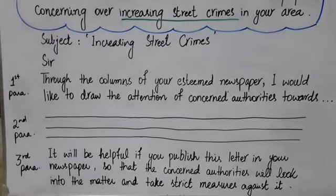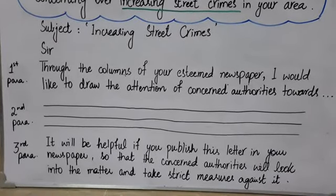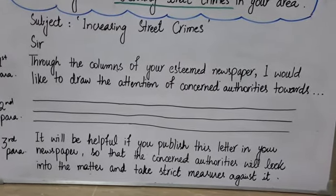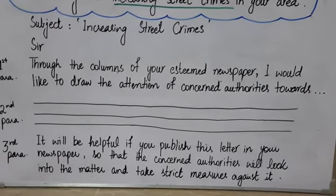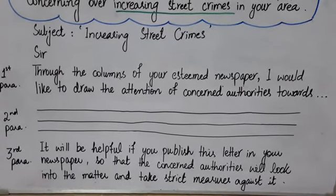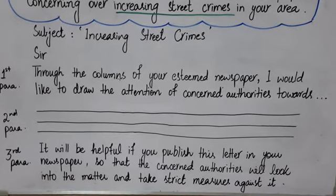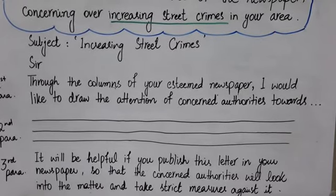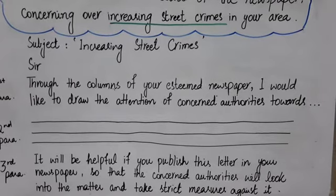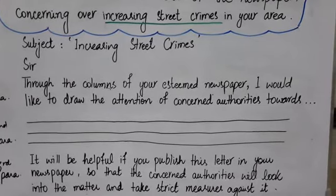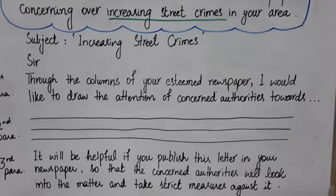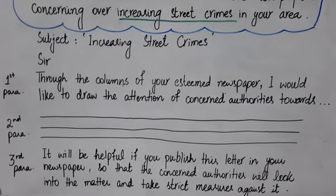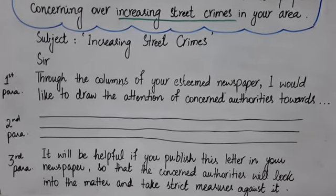In the second paragraph, write the details and the problems being faced due to these street crimes. You can also include suggestions in the second paragraph if you have any. In the third paragraph, write: 'It will be helpful if you publish this letter in your newspaper so that the concerned authorities will look into the matter and take strict measures against it' — or you can write 'try to solve it as soon as possible.' Just memorize these two standard paragraphs and write the second one according to the topic.